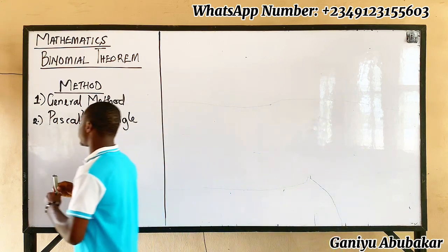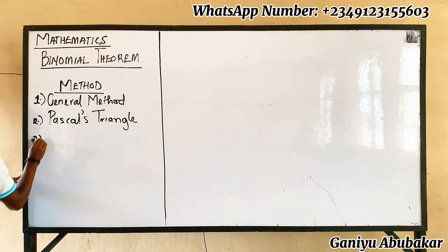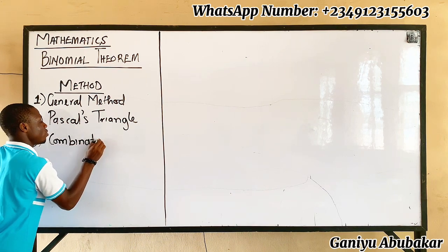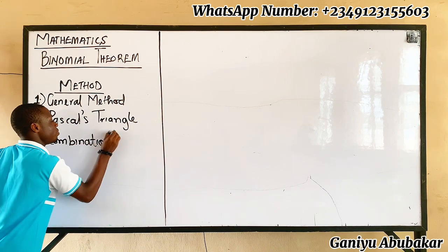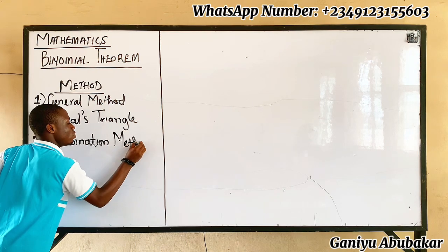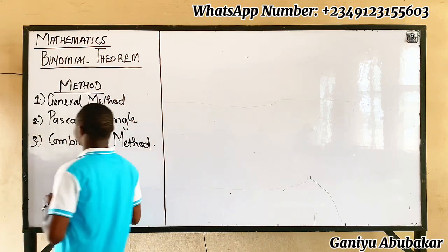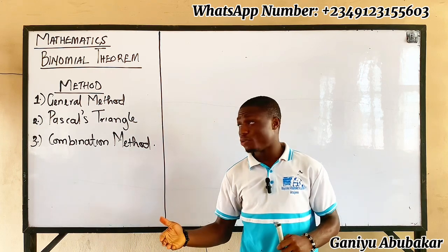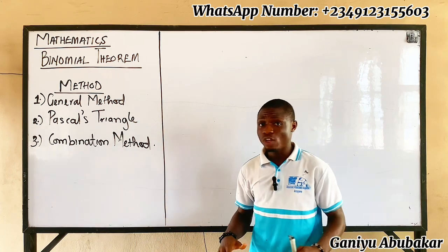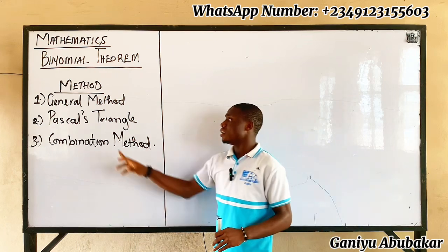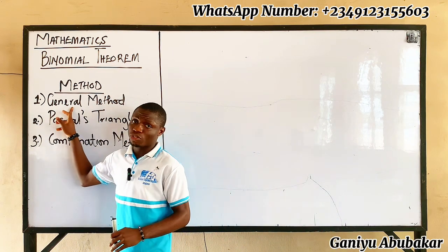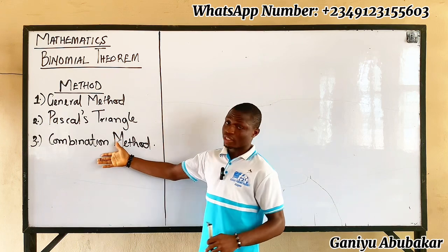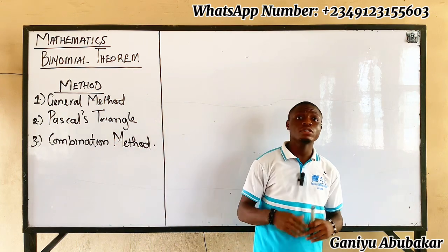The third method is called the combination method. These are the three distinct methods involved in the study of binomial theorem. For this class, we'll look at just the first one called the general method. In our next video, we'll look at Pascal's triangle and perhaps the combination method.